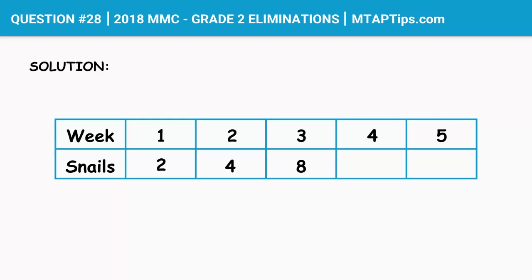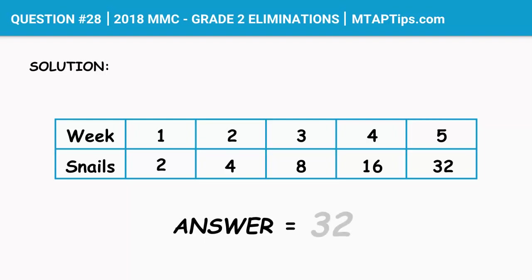In the first week, Linda had only 2 snails. When we multiply that by 2, she had 4 snails in the second week. If we multiply 4 by 2, Linda had 8 snails in the third week. That means in the fourth week, we just have to multiply 8 by 2 — we'll have 16. When we multiply 16 by 2, we'll have 32. So the answer is 32. There are 32 snails at the end of the fifth week.